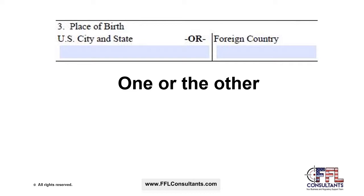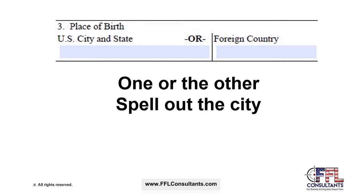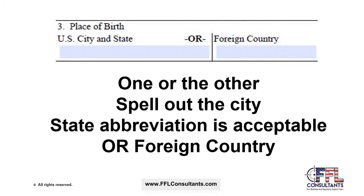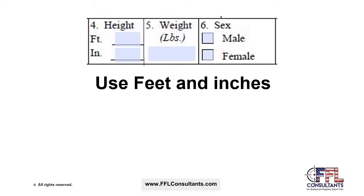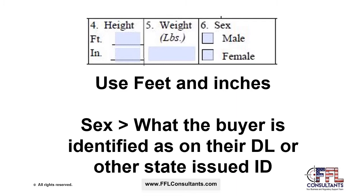Box 3 asks for the place of birth — either the US city and state or the foreign country. They must spell out the city; the state abbreviation is acceptable. Box 4 asks for height in feet and inches, and weight in pounds. For Box 6, sex or gender, the buyer should identify as what is listed on their driver's license or other state-issued ID at the time they're attempting to purchase a firearm.